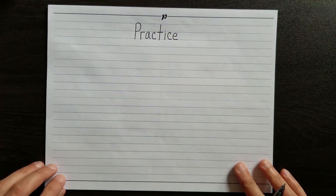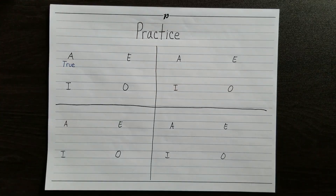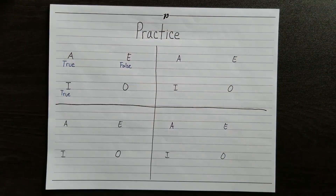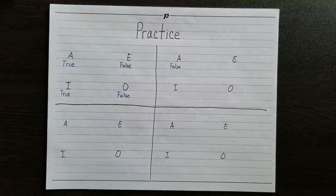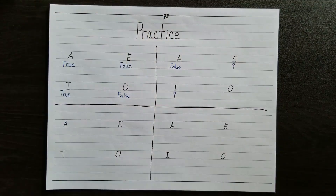Here's a little practice — pause the video before the answer and try these yourself. Let's say A is true. What can we infer about E, O, and I? A and E are contraries, so they can't both be true — E must be false. A is the superaltern of I, and when the superaltern is true, the subaltern must also be true, so I must be true. Finally, O is the contradictory of A and so must have the opposite truth value — O is false. Now let's say A is false. Since A and E are contraries, we can't know anything about E. Since A is I's superaltern, we can't know anything about I either. But we'll always know the contradictory — in this case, O must be true.